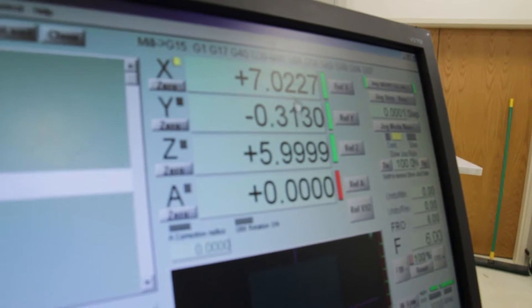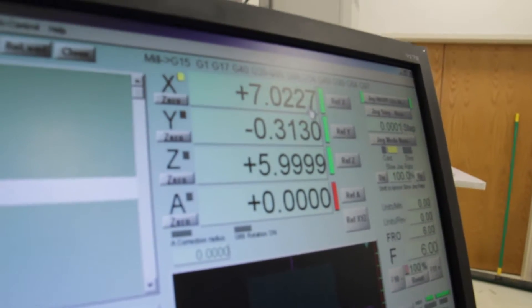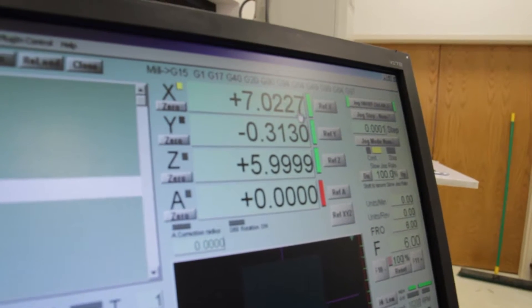So now the number we have in our readout is the total length of the part plus whatever our swing of our indicator is. If we divide our number by two, that'll give us the center of the part.